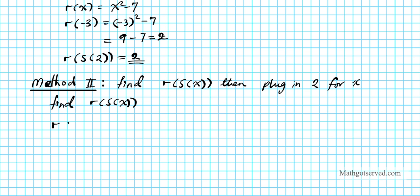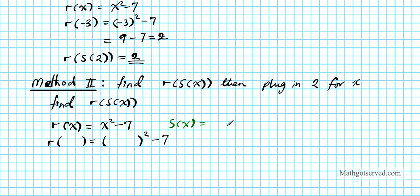The parent function is r of x, which is x squared minus 7. The parent function is about to accept the input function s of x, so we replace our x's with parentheses. The input function s of x has the value x to the third minus 11. So the name s of x goes on the left, and its value x to the third minus 11 goes on the right inside the parentheses.